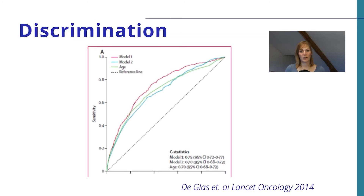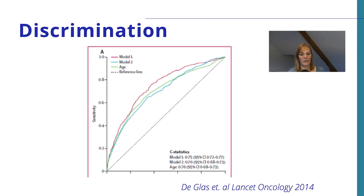The first way to do this is to take a look at discrimination. Discrimination is generally assessed by looking at the area under the curve of a receiver operating curve, which is a ROC curve — a term you may encounter a lot if you look at this type of data. What it does is allow you to take a look at the combination of the sensitivity and the specificity of the model. If you want to know more about these terms, please take a look at one of my previous videos.